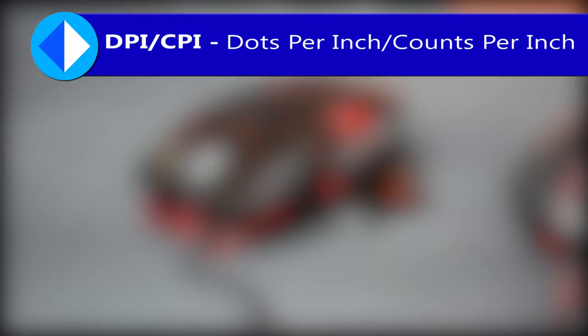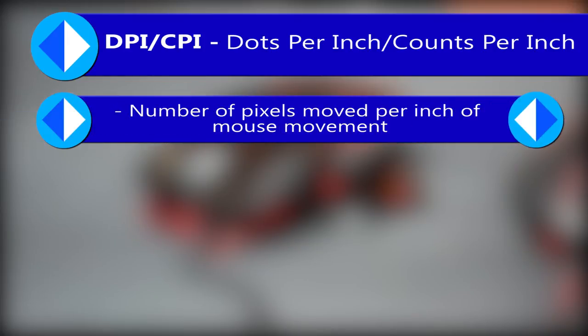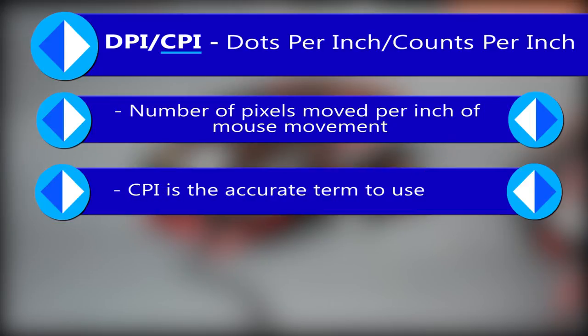Firstly is DPI/CPI — dots per inch and counts per inch respectively. DPI is taken from printing and is basically the number of pixels moved on your screen per inch. However this is not really the correct term to use. CPI is the number of counts the mouse will report to your computer per inch of movement.